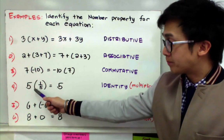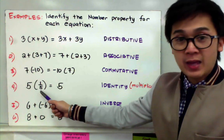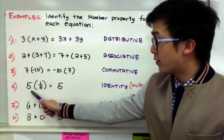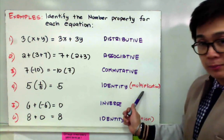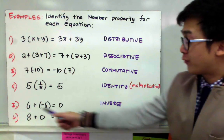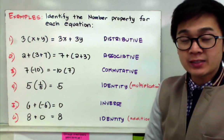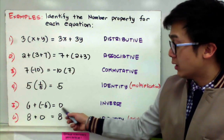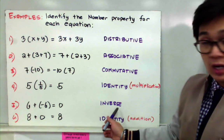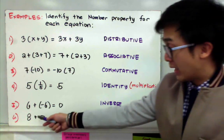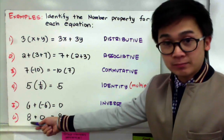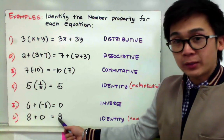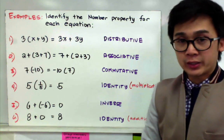For number four, we multiply five by one over five and it gives us one — therefore this is the identity property under multiplication. For number five, six plus negative six gives us zero, which is the inverse of addition, so this is the inverse property under addition. And for our last number, we have eight plus zero, which still gives us eight — the property we are using here is the identity property under addition.